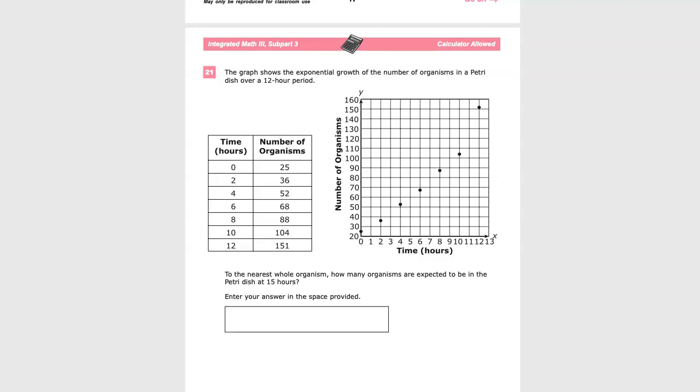The graph shows the exponential growth of the number of organisms in a Petri dish over a 12-hour period. So we have the table here, and we have this graph over here, which is convenient. So you don't have to hand-determine these amounts. To the nearest whole organism, how many organisms are expected to be in the Petri dish at 15 hours? Enter your answer in the space provided.